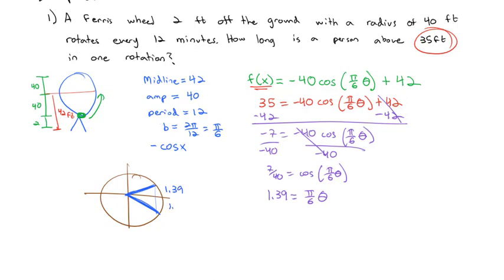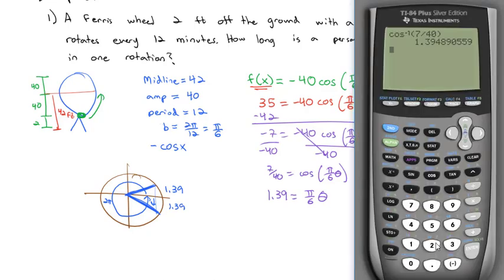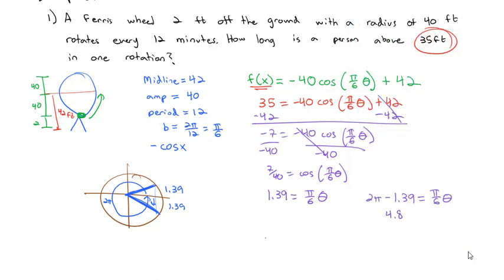So we know the first angle is 1.39. The second angle is 1.39 down from the horizontal. So to get that, we know it's 2π all the way around. And we come back 1.39. So our other option is 2π minus 1.39 is equal to π/6·θ. And I can do that, 2π minus 1.39, to find out that that angle is actually 4 point, let's round it to 89. 4.89 is equal to π/6·θ.